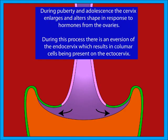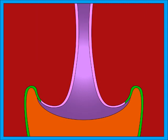During puberty and adolescence, the cervix enlarges and alters shape in response to hormones from the ovaries. During this process, there is an eversion of the endocervix, which results in columnar cells being present on the ectocervix, as can be seen here.